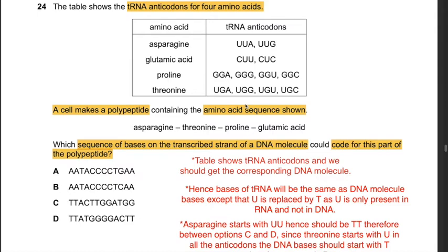Question 24: The table shows tRNA anticodons for four amino acids. Which sequence of bases on the transcribed strand of a DNA molecule could code for this part of the polypeptide? The bases of tRNA will be the same as the bases of the DNA molecule, except U is replaced by T, since U is only present in RNA. Since asparagine starts with UU in the anticodon, it should be TT in the DNA molecule. Also, since the anticodon starts with U, the DNA base should start with T. Therefore the answer is D.